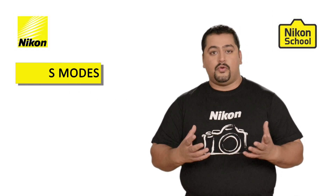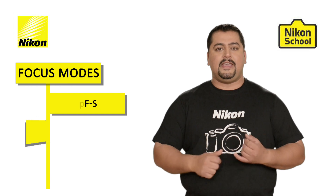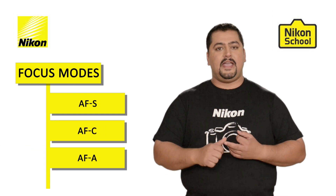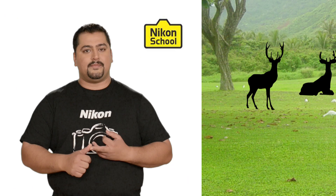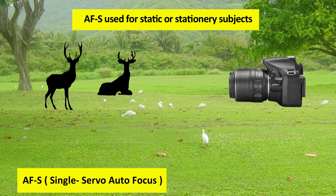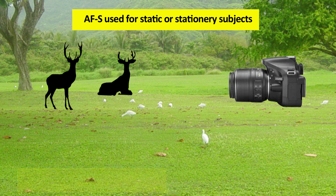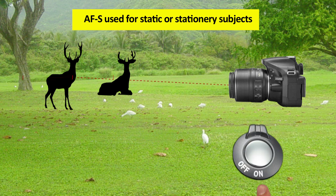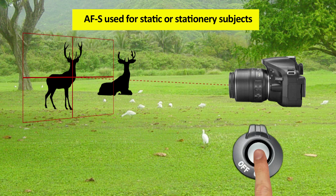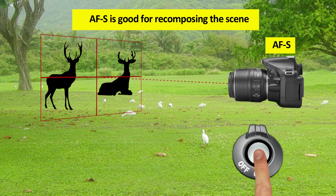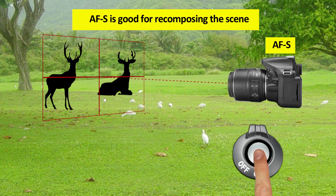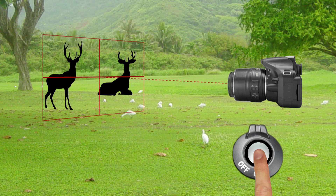Focus mode has three different components: AFS, AFC, and AFA. In AFS, or single servo auto focus mode, it is generally used for stationary subjects. Focus locks when the shutter button is pressed halfway and the shutter can only be released if the camera is able to focus. This mode also gives you the liberty of recomposing your scene after the focus is locked.